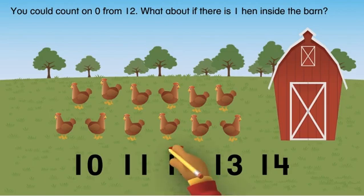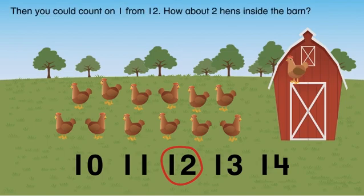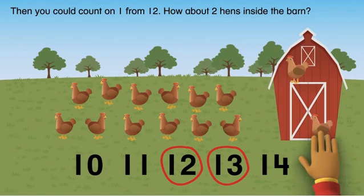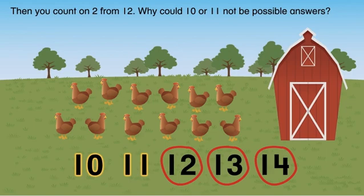You could count on 0 from 12. What about if there is 1 hen inside the barn? Then you could count on 1 from 12. How about 2 hens inside the barn? Then you count on 2 from 12.